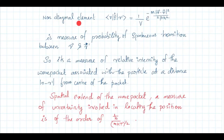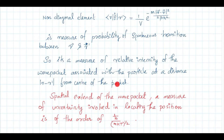The off-diagonal element ⟨r|ρ|r'⟩ = (1/V) e^{-m|r-r'|²/2βℏ²} is a measure of the probability of spontaneous transition between positions r and r'. It is a measure of the relative intensity of the wave packet associated with the particle at a distance |r-r'| from the center of the packet. The spatial extent of the wave packet is of order ℏ/√(mkT).